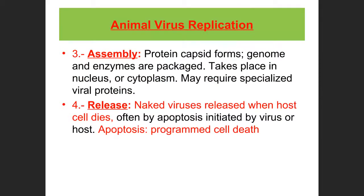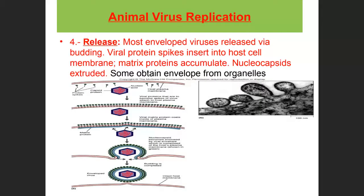Assembly of viral particles occurs if the virus has not become latent. New viral particles are then released. Naked viruses are released when the host cell dies by apoptosis. Envelope viruses are typically released by budding: viral proteins and spikes are assembled into the host cell membrane, and the protein pushes against the membrane and buds out as an enveloped virus. Budding keeps the host cell alive for a lengthy period, slowly producing viral particles over time.